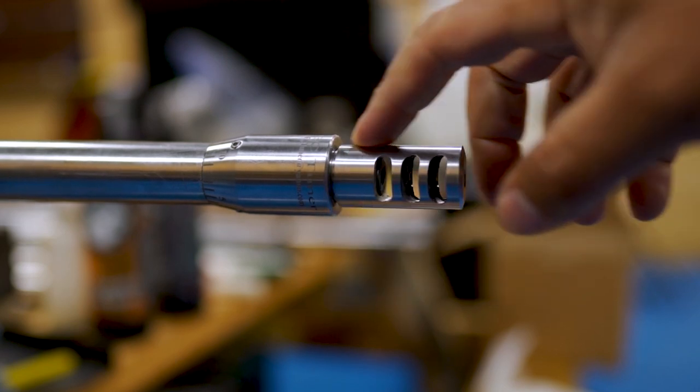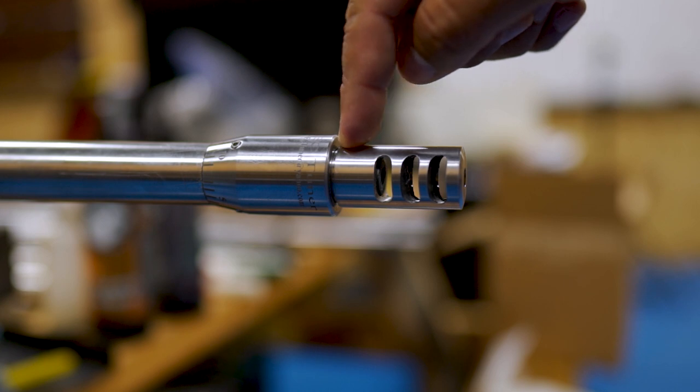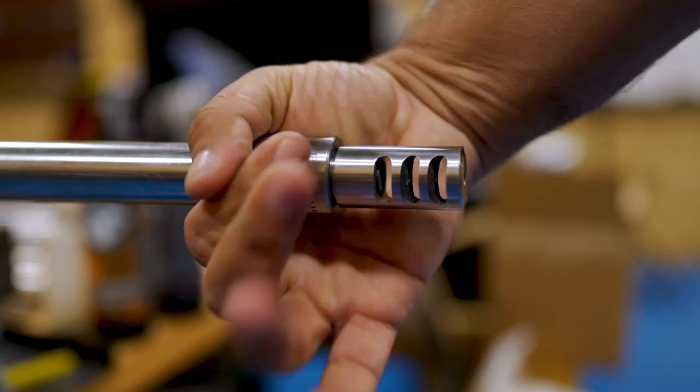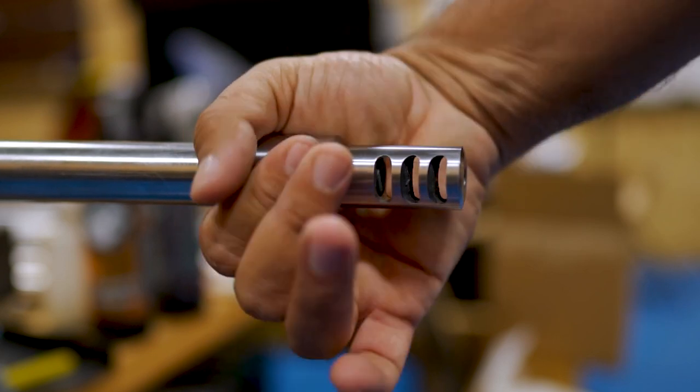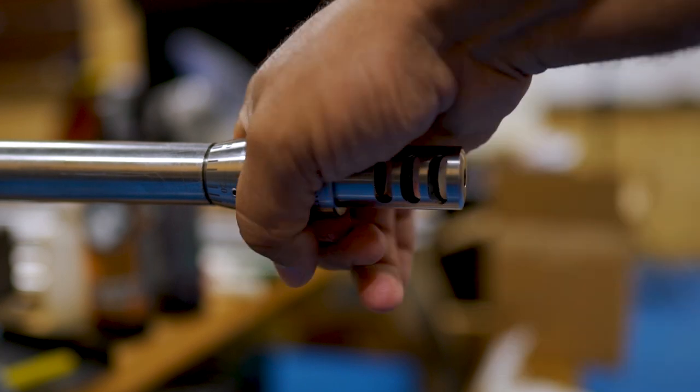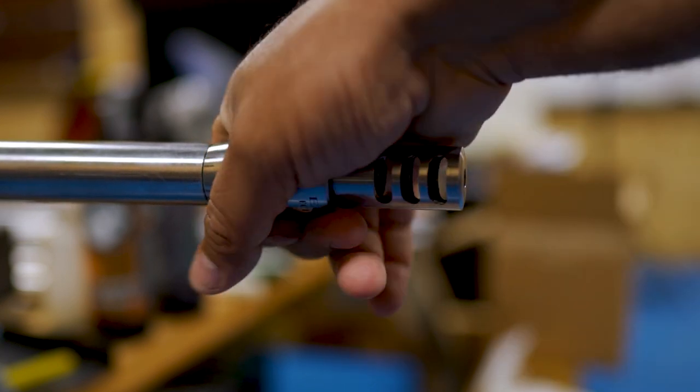Once your muzzle device is installed, you'll have a gap of about 0.050 inches between the tuner and your muzzle device, and that's going to allow you slightly more than one full rotation of adjustment. You should be able to find something that shoots good in your rifle in less than one full rotation.